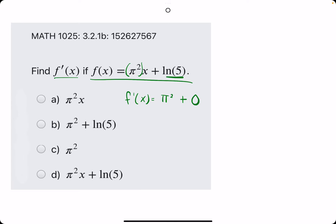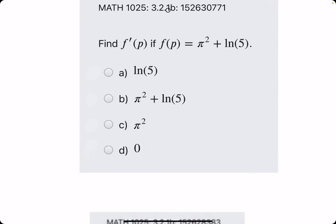So π² plus zero is just π². So we are looking for c to be our answer. Let's go ahead and do one or two more of these.